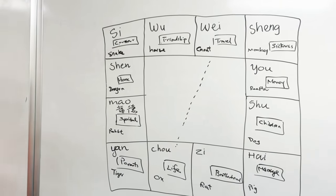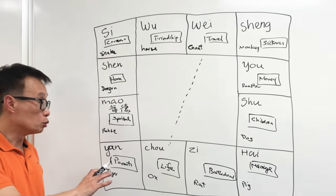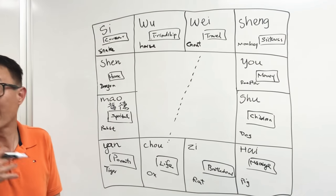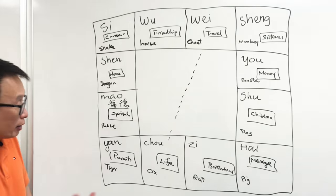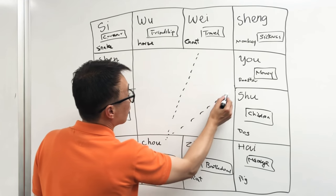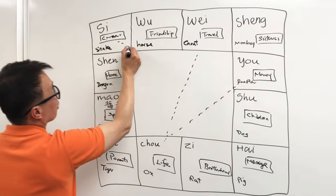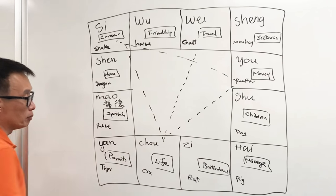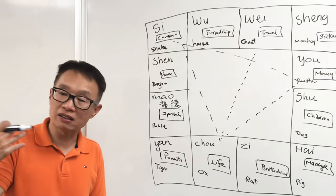The nice thing about Ziwei Dou Shu is that the things you normally care about are already down here. Normally we care about how much money, our career, and then our life. Our life is more like our character, our destination. Ming, that's right.